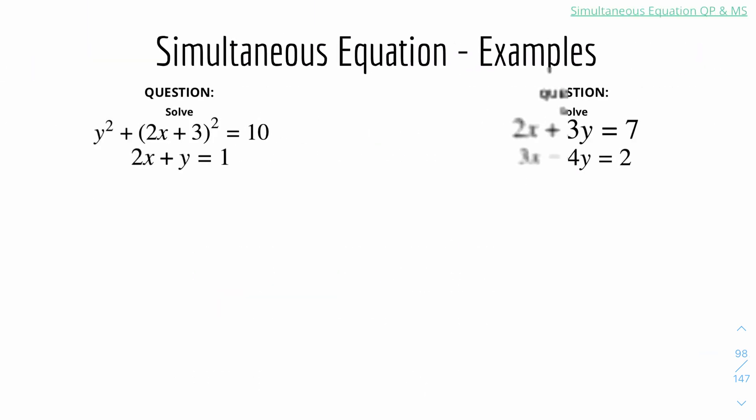Here's an example for simultaneous equations. We have y squared plus 2x plus 3 squared equals 10, and number 2 is 2x plus y equals 1. So what I can do is rearrange the equation to use the substitution method. The second equation would be 2x equals 1 minus y.